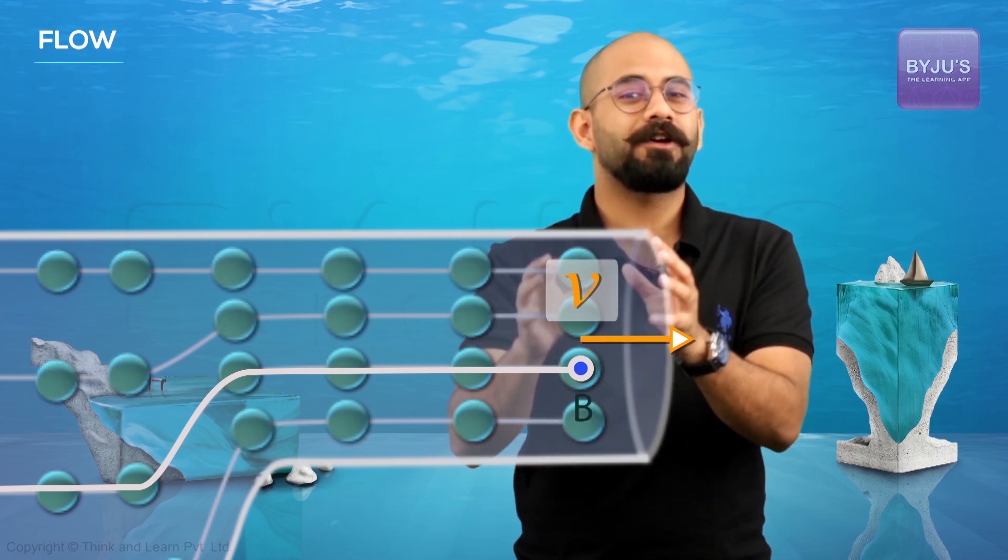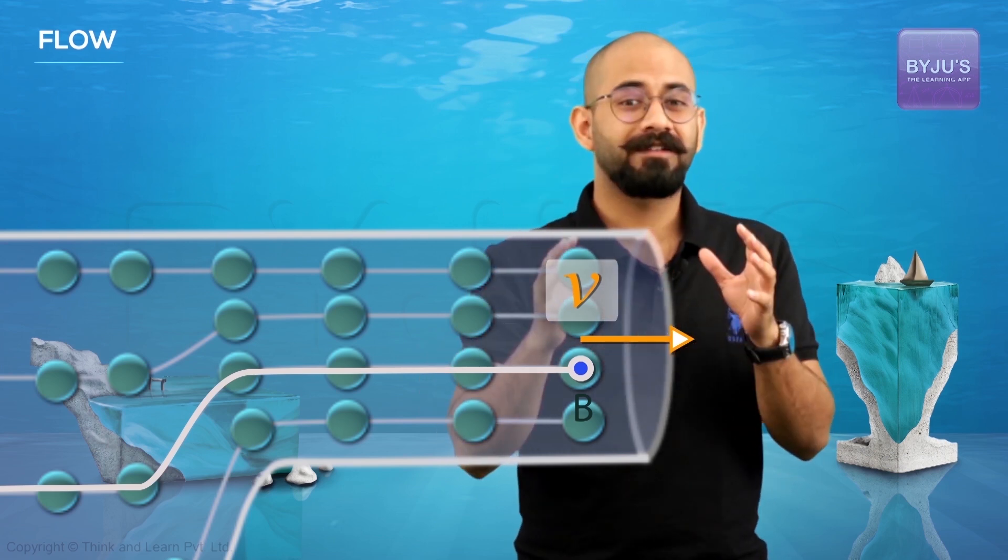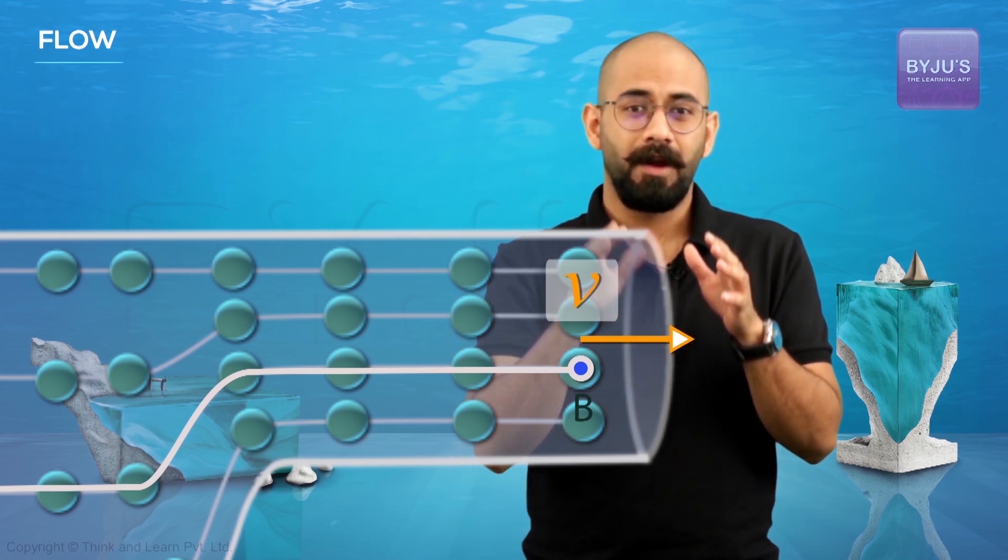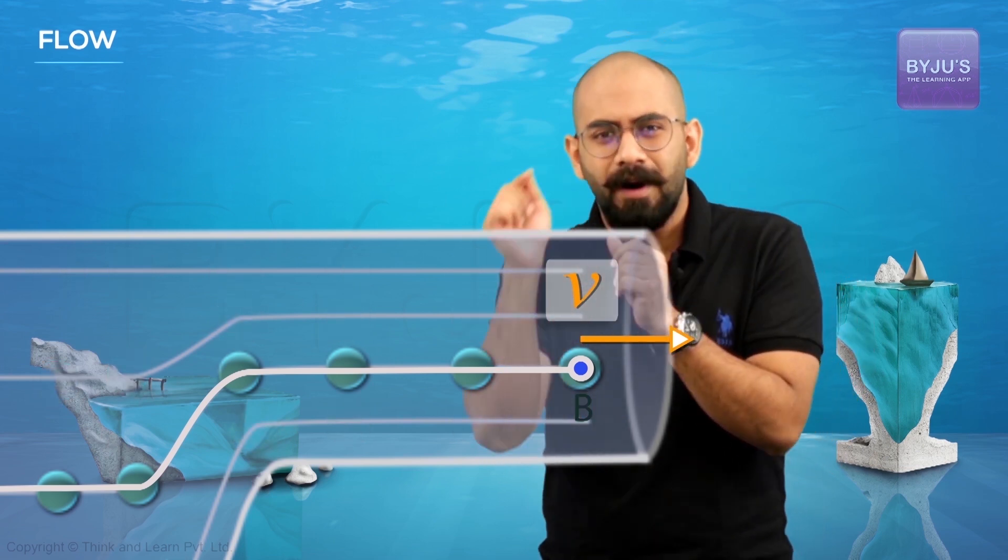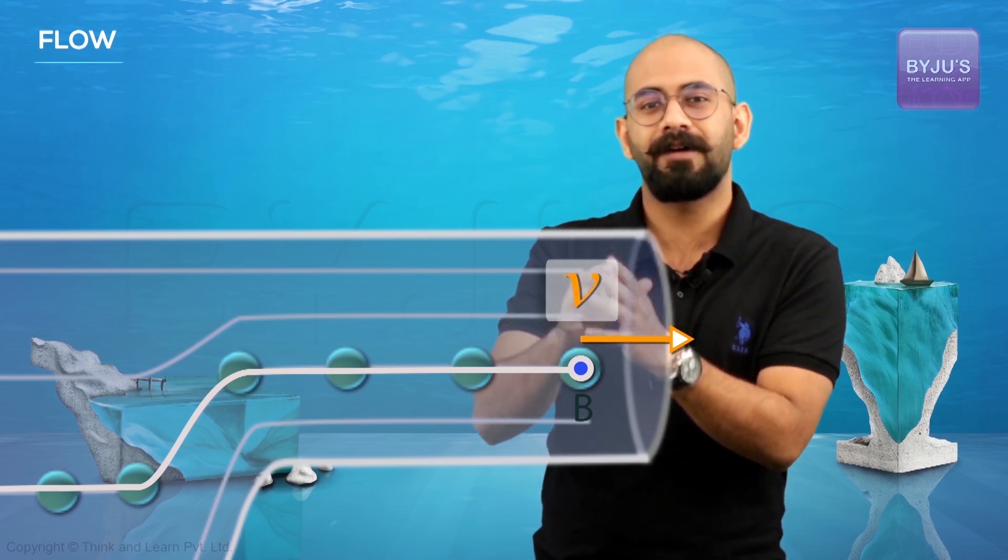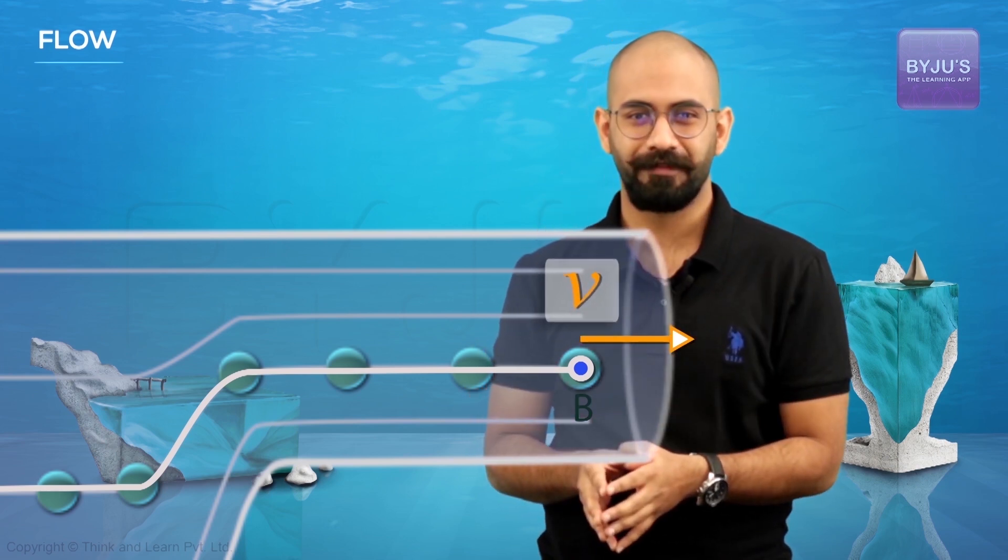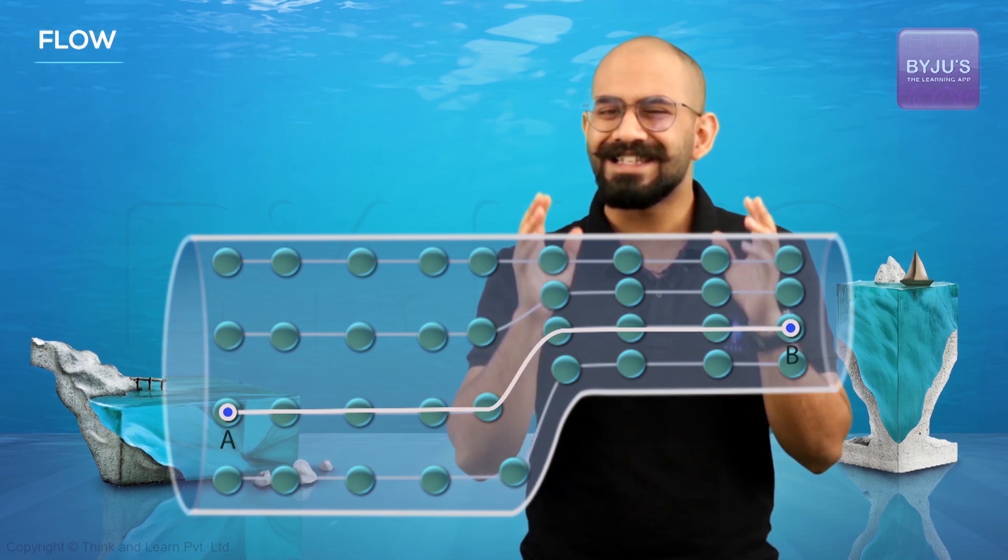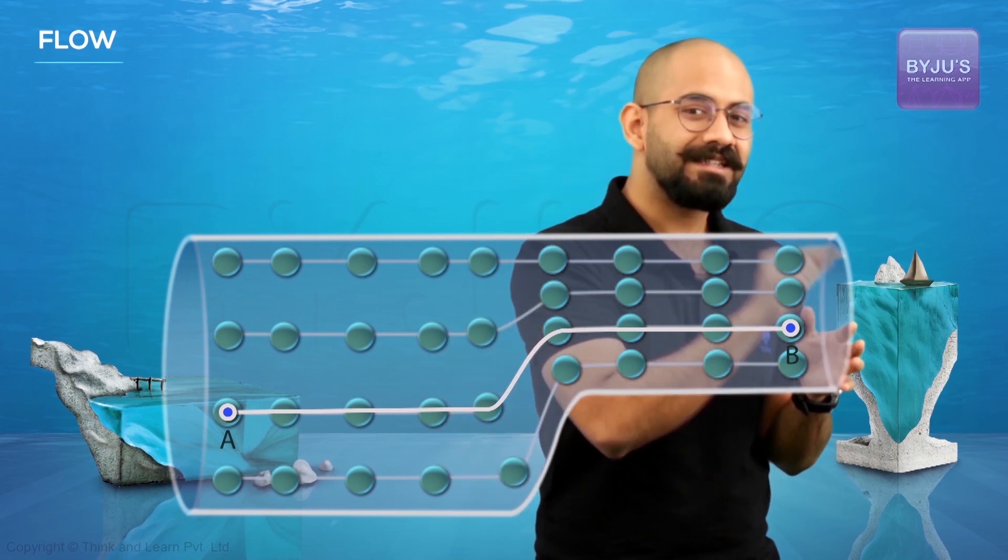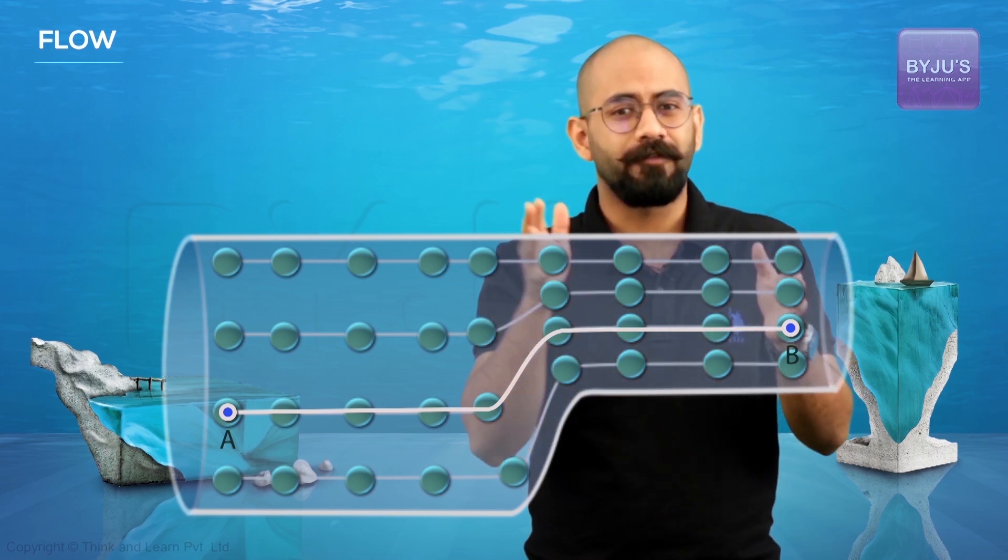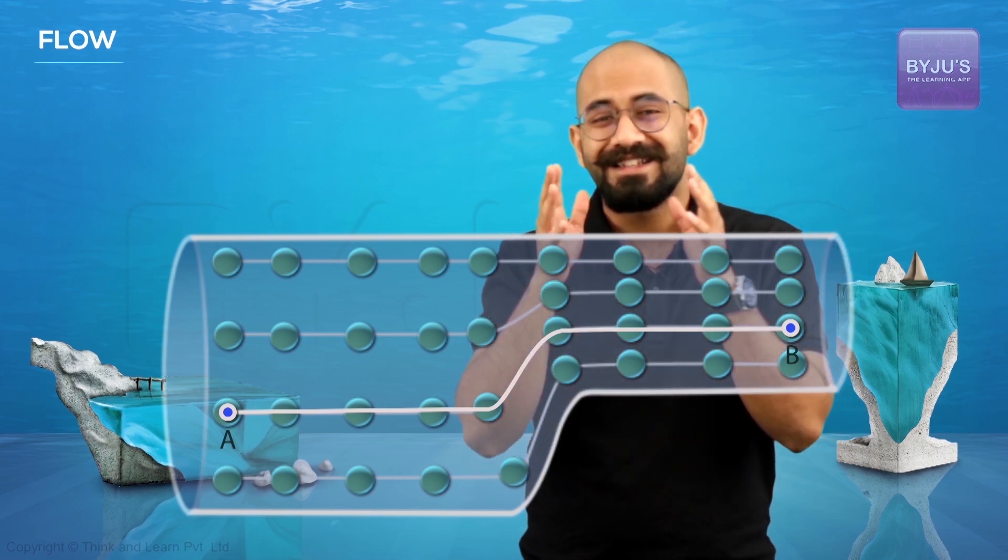I am not saying that the velocity of every particle will be constant. In fact, it can keep changing. But if I keep concentrating on this point, every time a particle reaches that point, it will have the same velocity. Now this type of flow is called steady flow and these lines which are always tangential to the velocity of the particles are called streamlines.